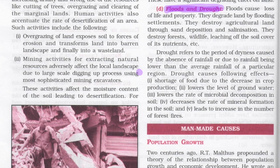Drought refers to a period of dryness caused by the absence of rainfall or rainfall being lower than normal in a particular area or region. Drought leads to a shortage of food because crop production is less. It lowers the level of groundwater, lowers the rate of microbial decomposition in soil, decreases the rate of mineral formation in soil, and leads to an increase in the number of forest fires.